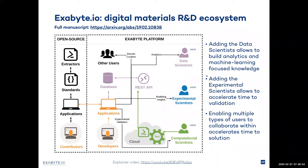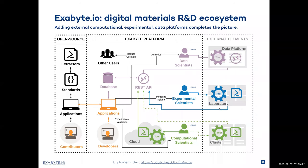Adding data scientists is key to build any kind of artificial intelligence and machine learning models, and that's what we support today as well. We have future plans to add support for experimental scientists too. Today they can also see the modeling insights, but as we go forward we should be able to facilitate collaboration between the three different kinds of sciences in a more involved way. The external elements are also part of this ecosystem — the data platform tools that data scientists deploy on their computers or in-house, laboratory equipment we can connect to, and any kind of internal high-performance computing clusters that computational scientists are deploying today.